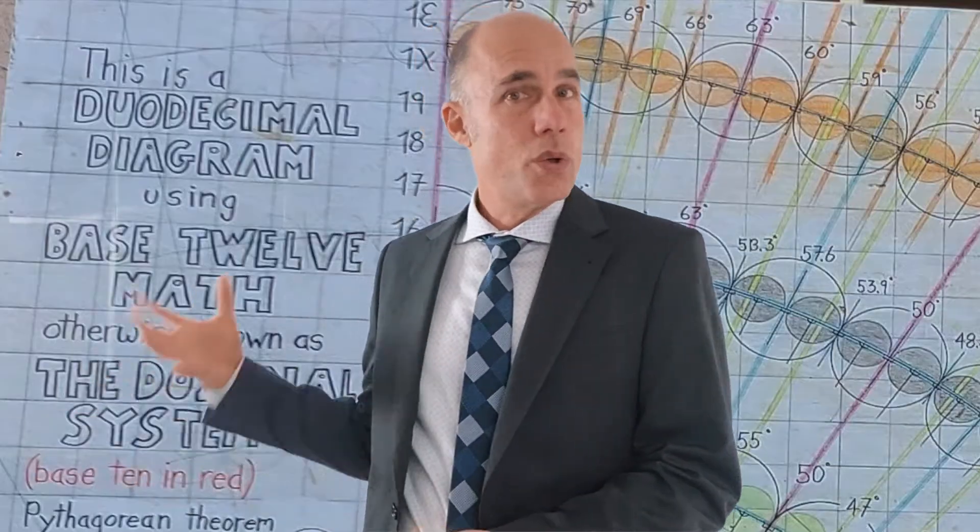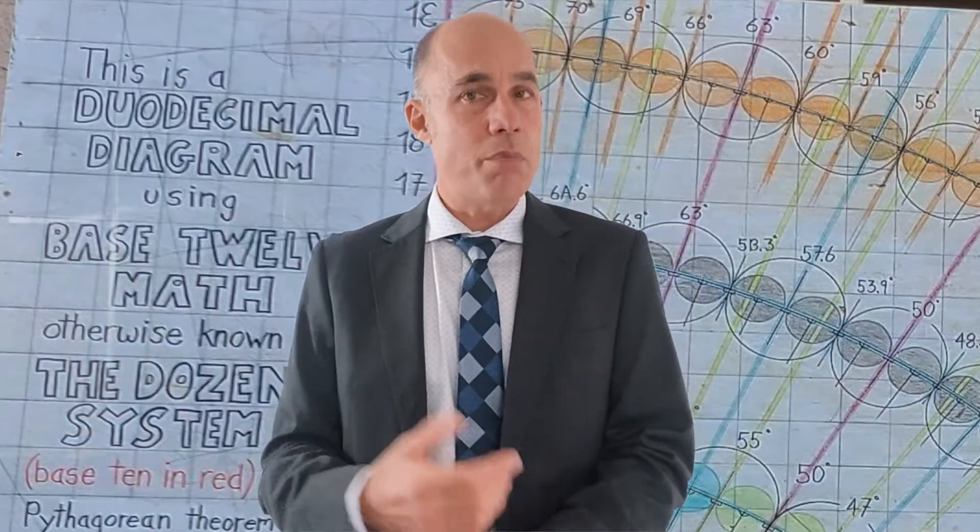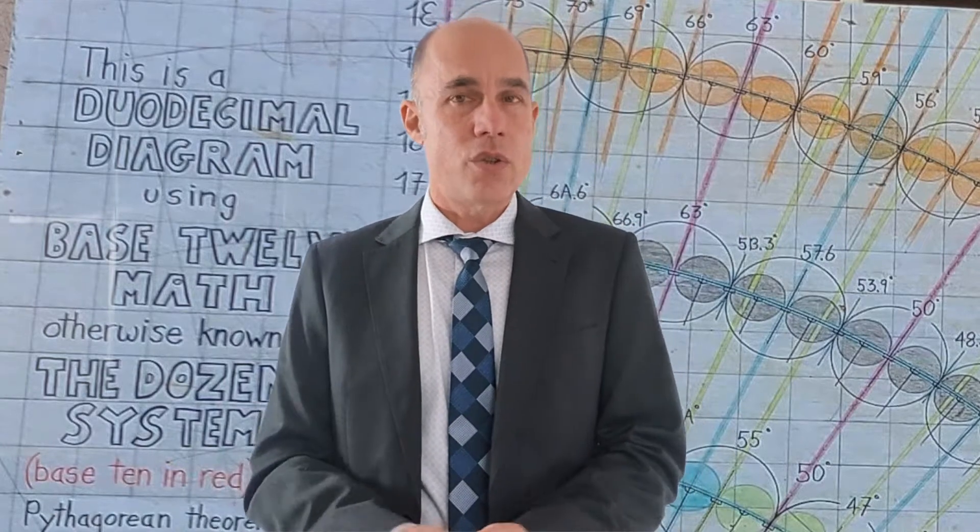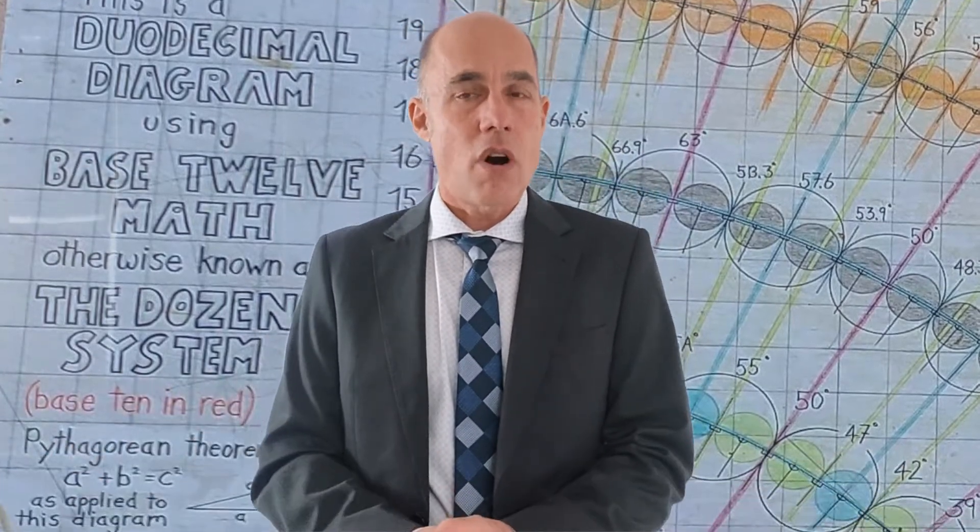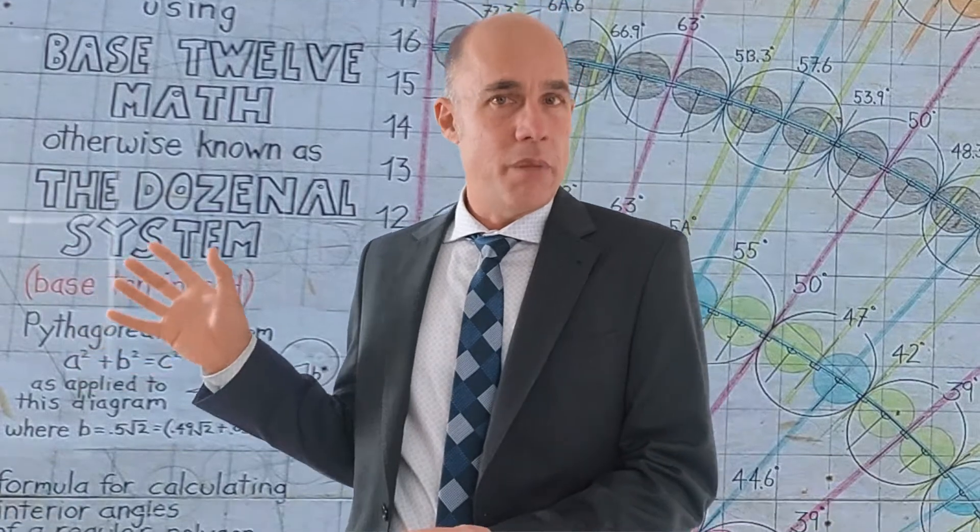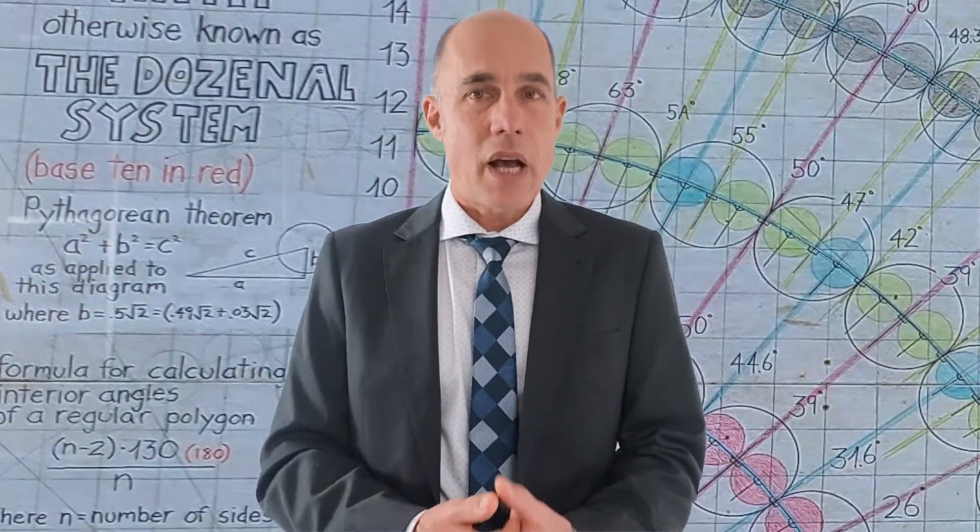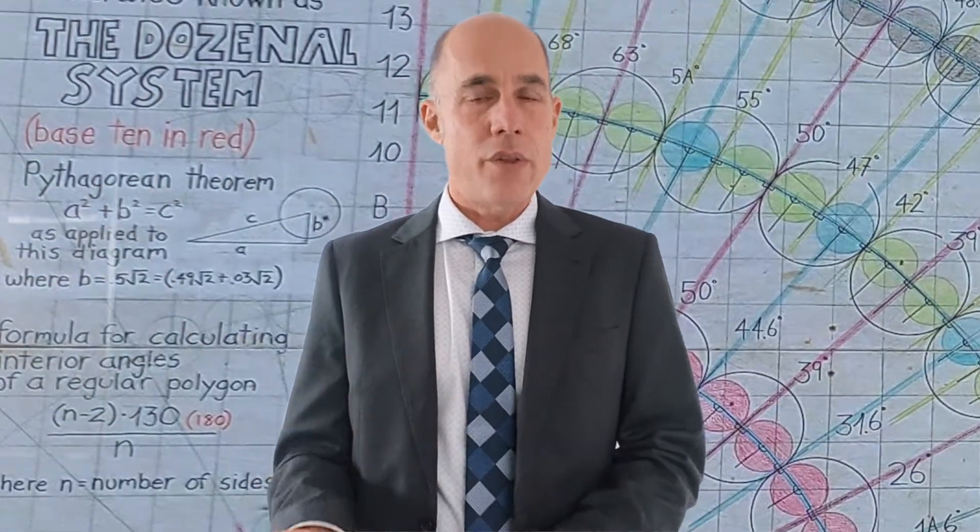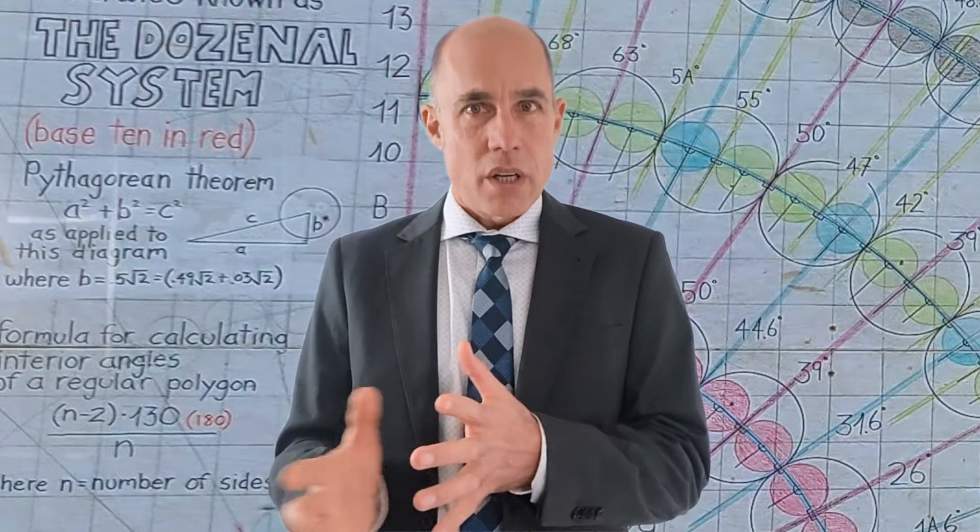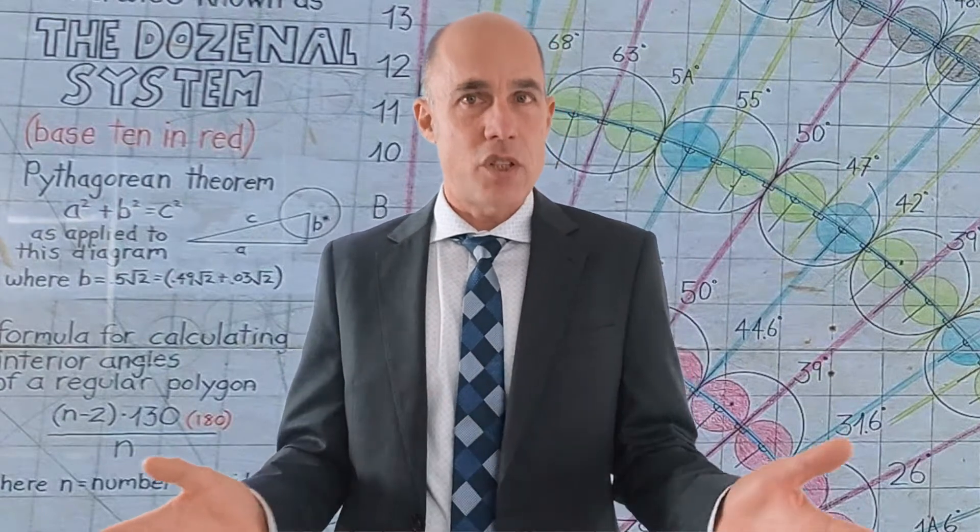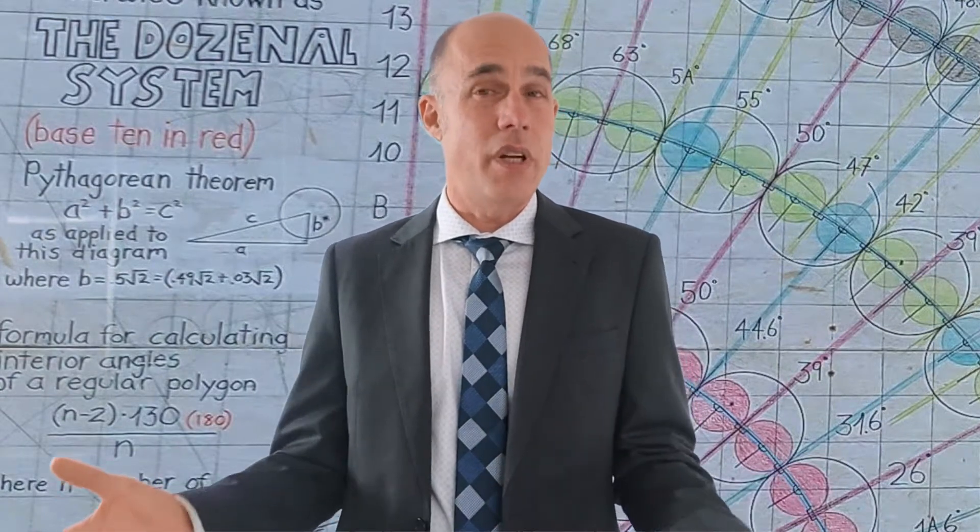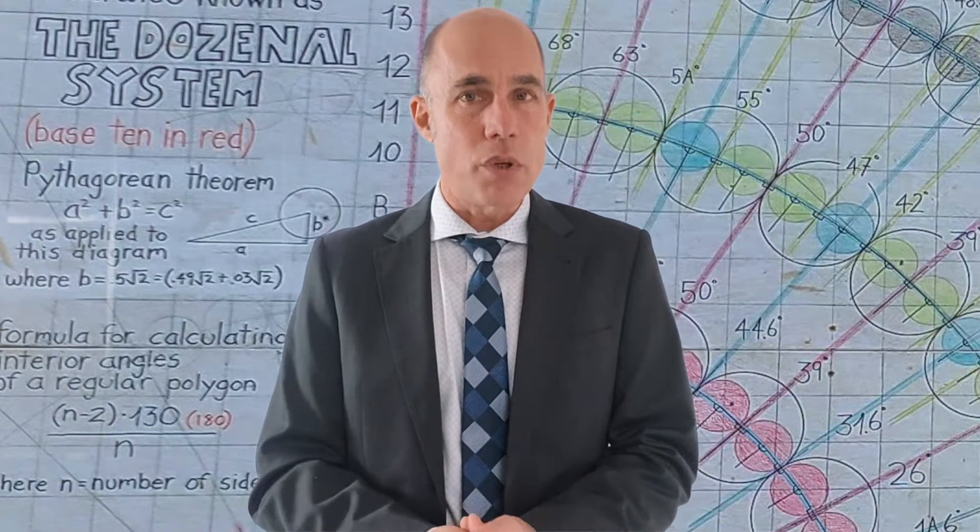So first of all, this is a duodecimal diagram. That means we're using base 12 math, otherwise known as the dozinal system. All of the black numbers are going to be base 12 numbers. But I have included some numbers in red, thus in base 10, just to help the transitioning from base 10 to base 12, because obviously base 12 is a little bit unfamiliar for most people.